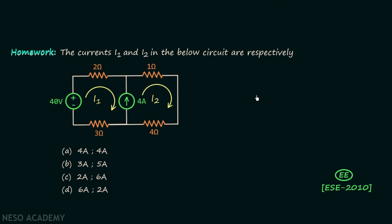Now we will move on to the homework problem. In the homework problem you are required to find out current I1 and current I2 in the below circuit. The question is taken from ESE 2010 electrical paper and you have to think about the best possible way to calculate current I1 and current I2.